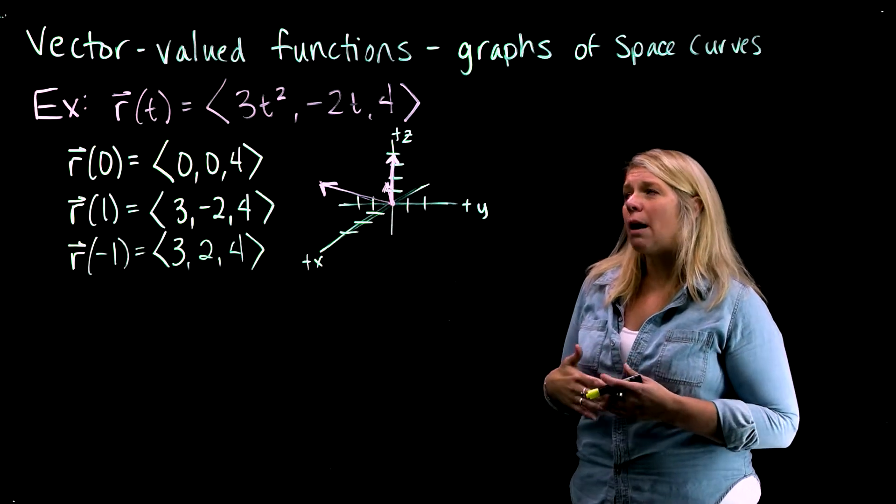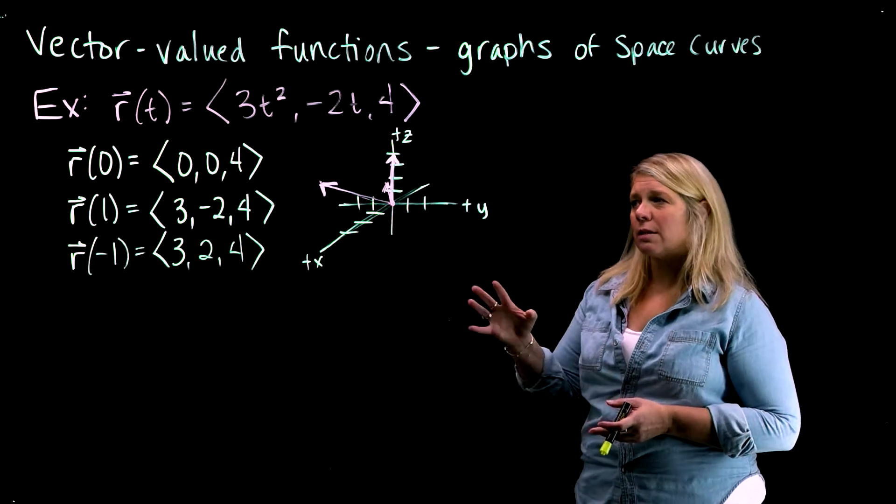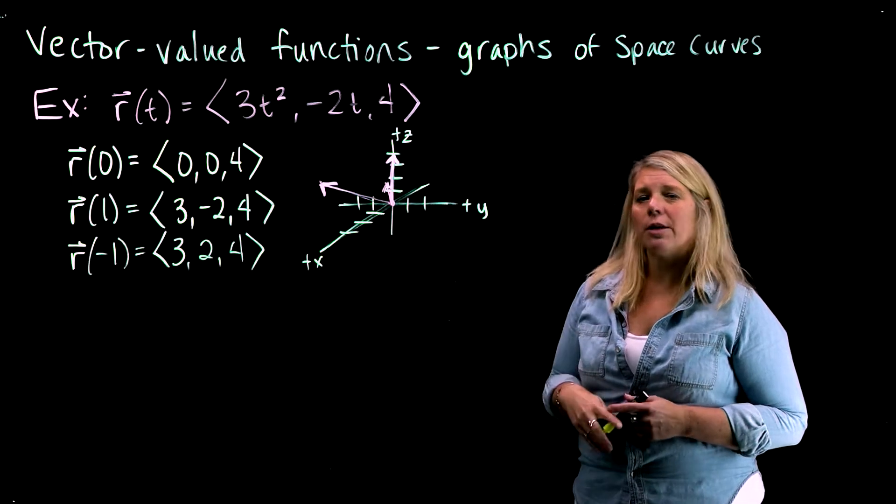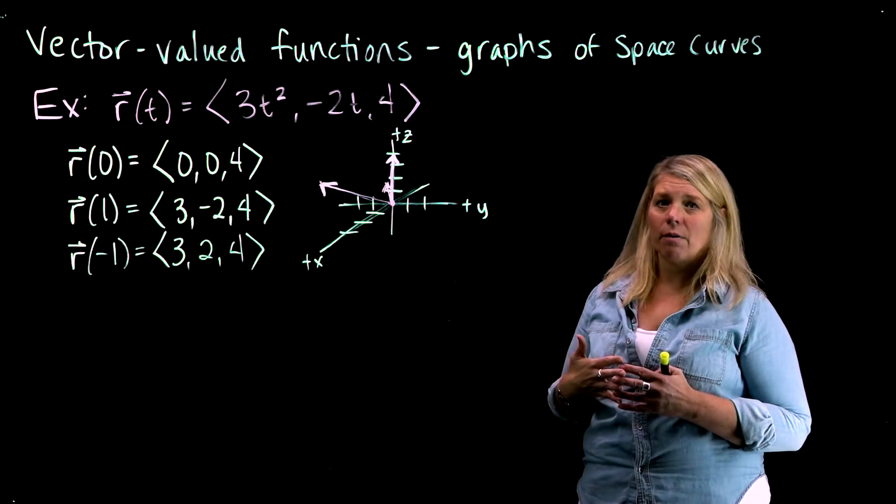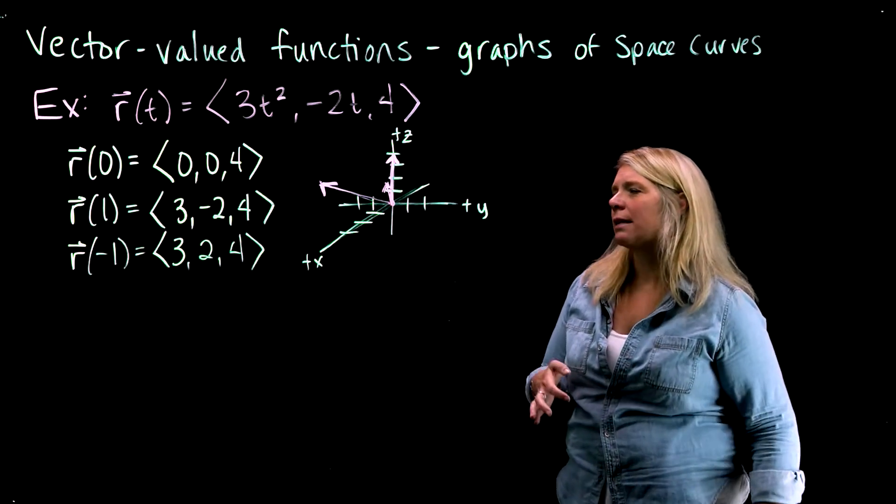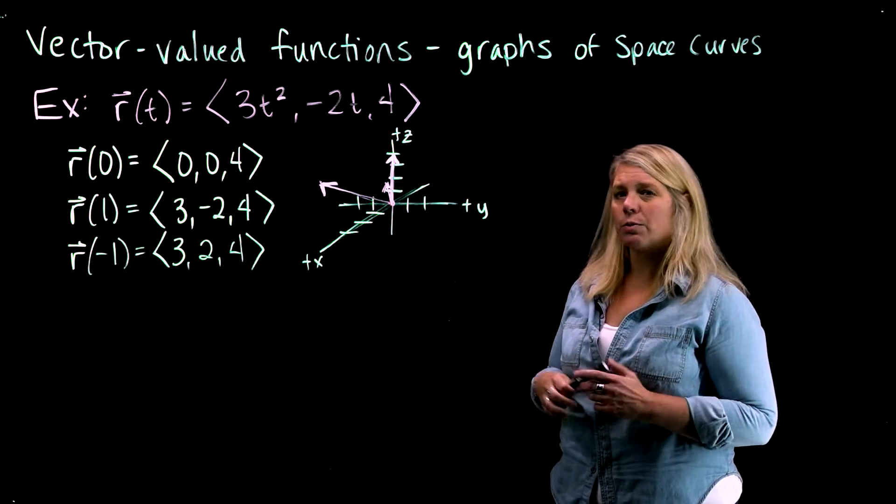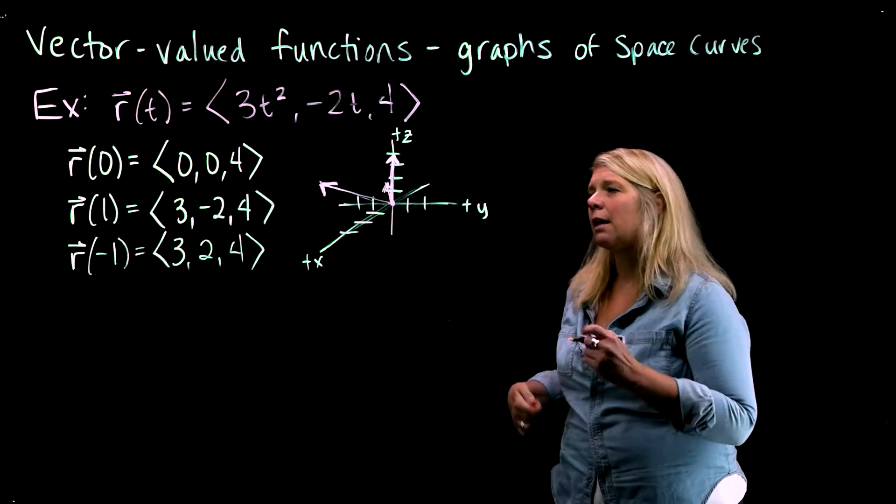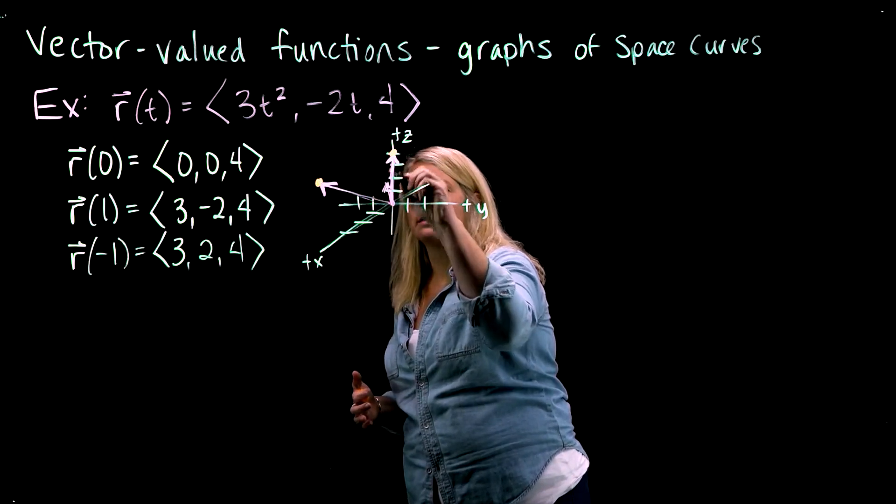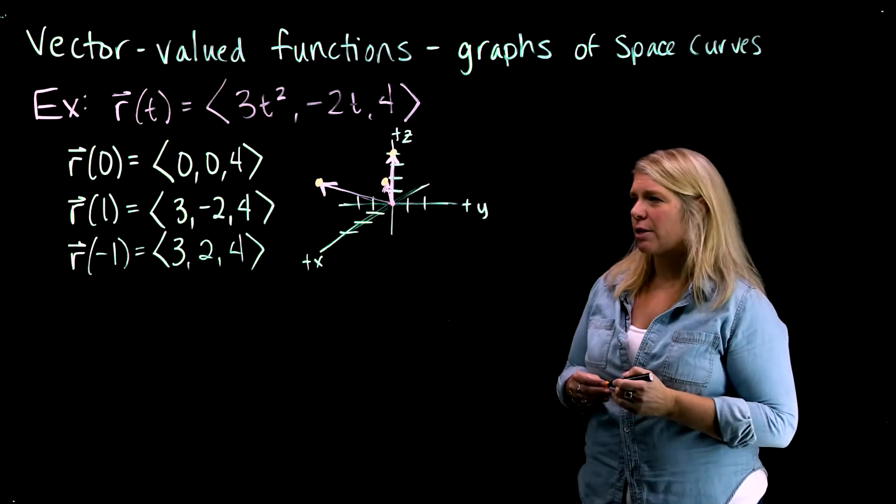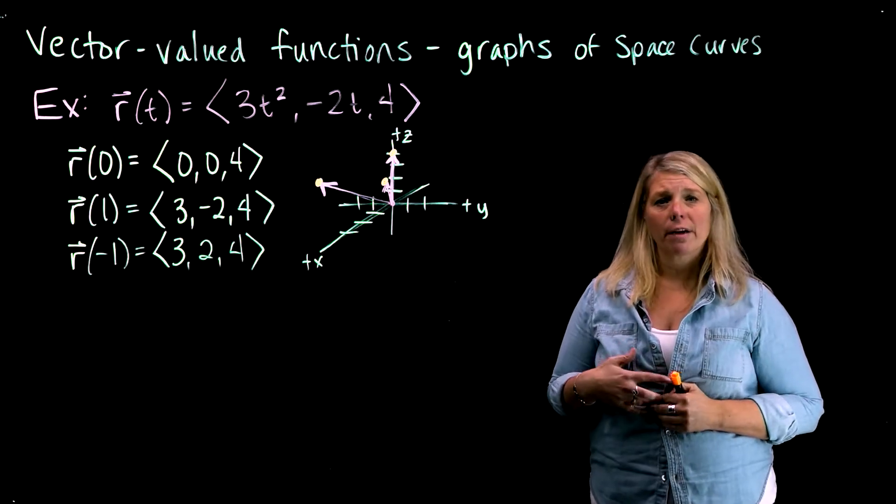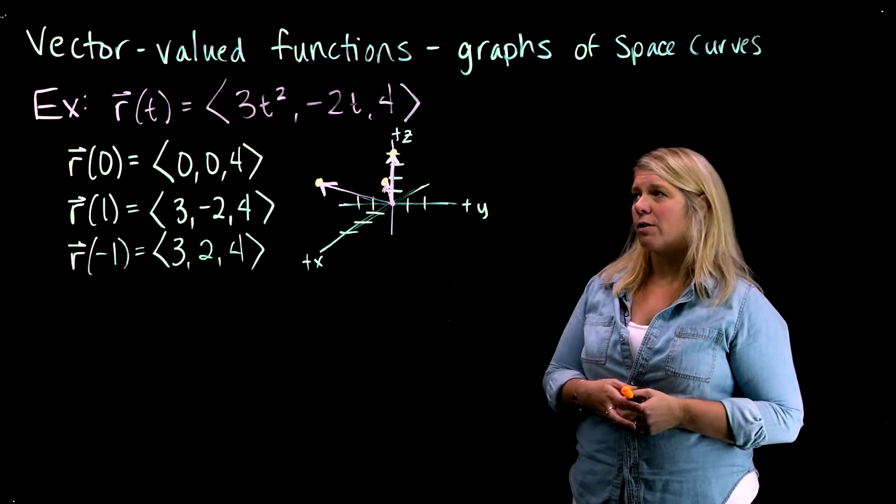So when we think about graphs of vector-valued functions, essentially what we do is sort of strip away some of the extra information here so that we can focus on just a part of what we're looking at here. And one thing that you should notice is that I drew all of these vectors with their tails at the origin. And when I do that, there are some points at the terminal point of each of those vectors.